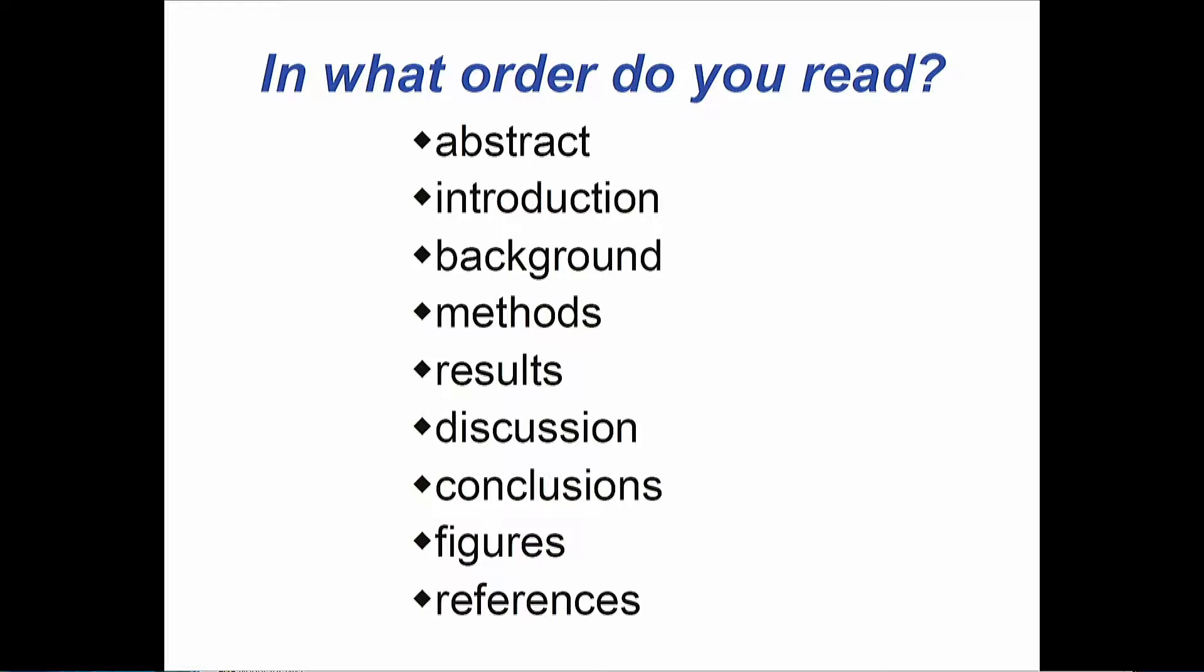Now, imagine that the reader is going through your paper or imagine you are the reader going through someone else's paper. Question for you: in what order do you read the paper? The topics here, the structure of the paper, is more or less listed in sequential form. There's the title, abstract, introduction, background, methods, results, discussion, conclusions. Figures are throughout, references at the end. But think about when you are going through and reading a paper, what are the first two or three things that you actually look at?